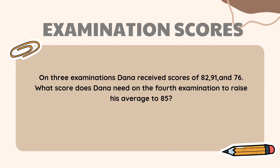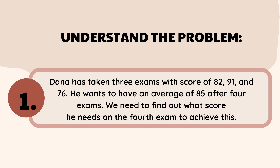The first step is to understand the problem. Dana has taken three exams with scores of 82, 91, and 76. He wants to have an average of 85 after four exams. We need to find out what score he needs on the fourth exam to achieve this, so it is important to comprehend the problem to know the possible solution and operations.